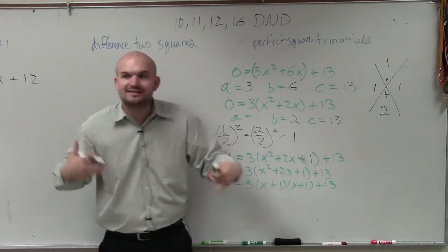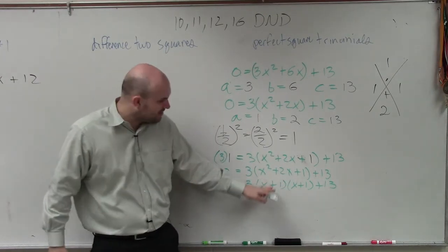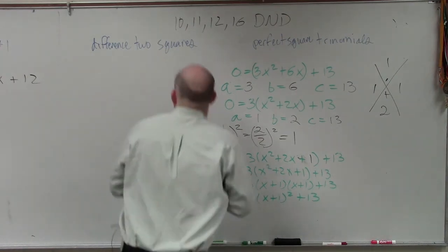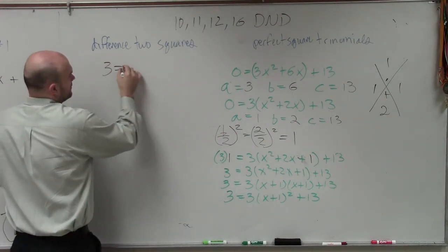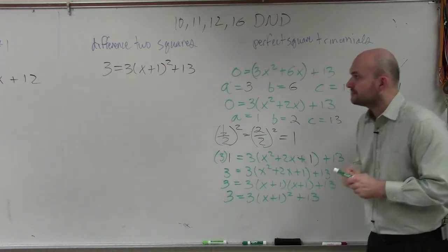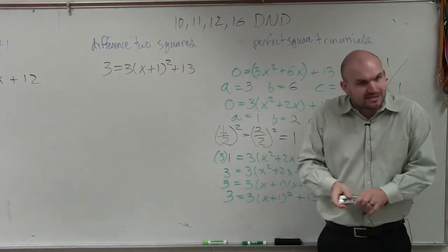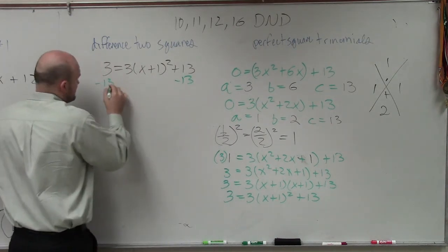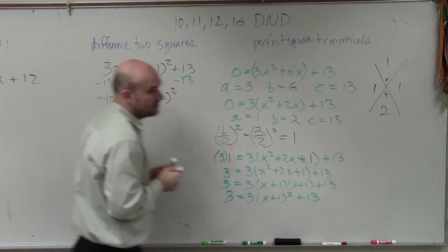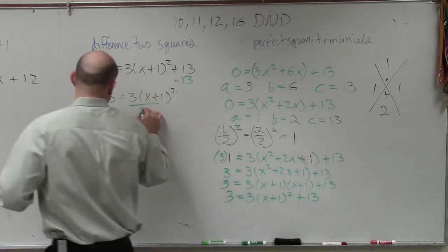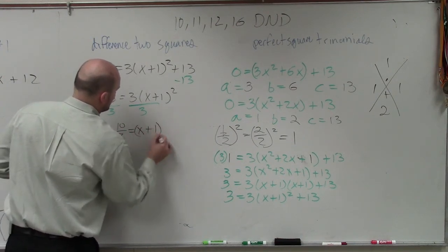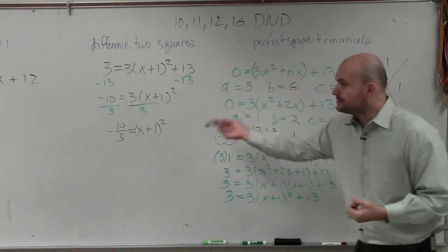Now, when you factor this, again, guys, remember, I'm trying to get you forward. You factor this as a perfect square trinomial. That is your trinomial squared. 3 equals 3 times x plus 1 squared plus 13. Does everybody see me so far? Now, we need to solve for x. So how do you solve for x? Well, you subtract the 13 on both sides. And you have negative 10 equals 3 times x plus 1 squared. Then we divide by 3. So I have negative 10 thirds equals x plus 1 squared.